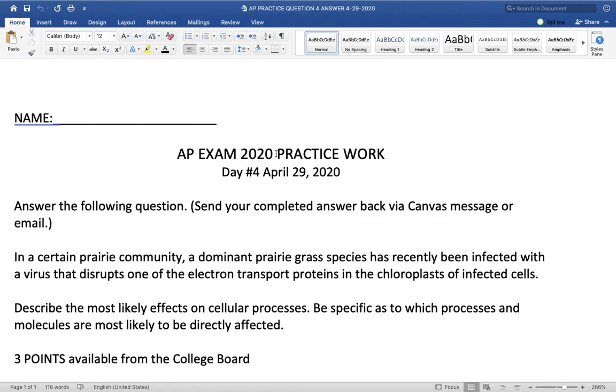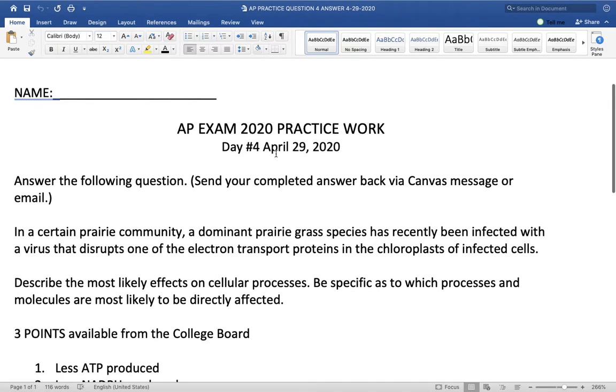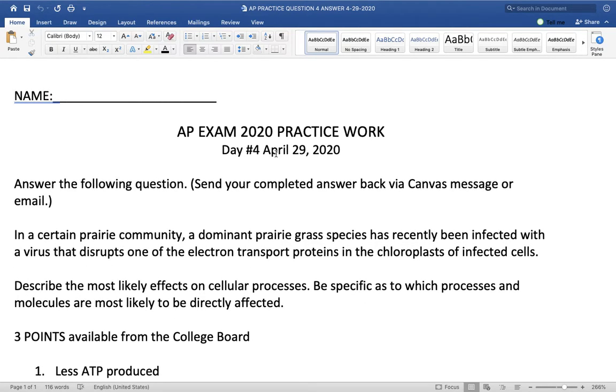On an FRQ on your test, this will be a three-pointer. And here's what you need to get to three points. One, there will be less ATP produced by that cell. And remember, inside a chloroplast during the light reactions would make ATP. So, if this virus disrupts that electron transport chain, you would not make ATP or as much ATP.